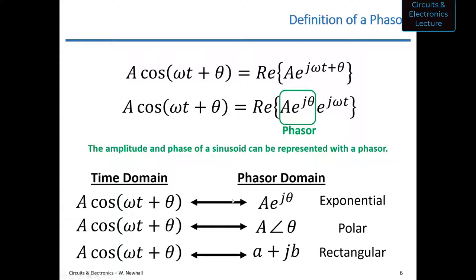What I want to do today is start with a simple example of adding two sinusoids together, and then move on to circuit concepts with phasors and impedance. As I showed on a slide, instead of directly adding two sinusoids, you can add the two phasors and then convert those phasors back to sinusoids. I'll show you how to do that now.